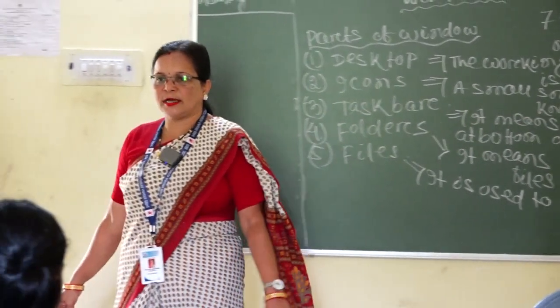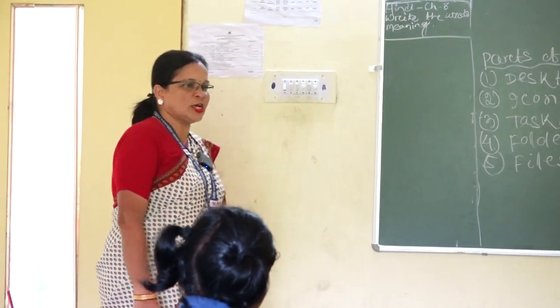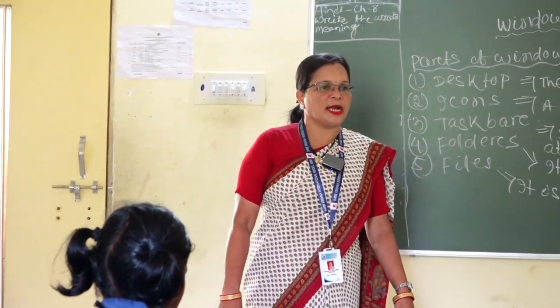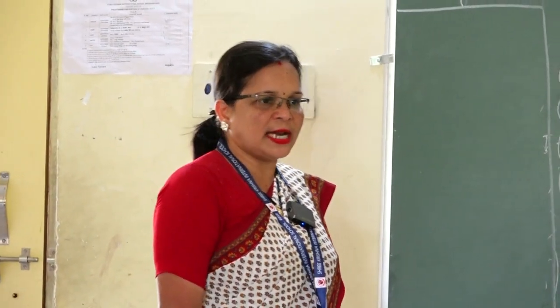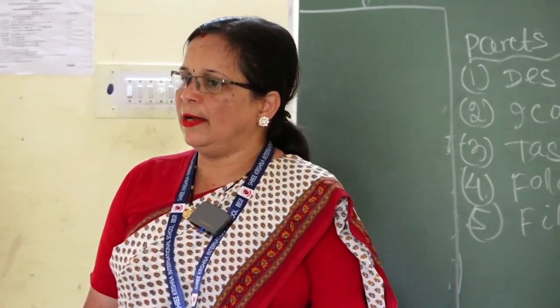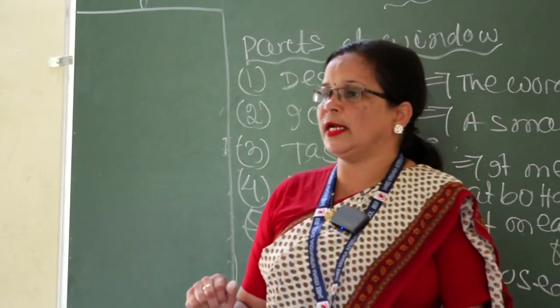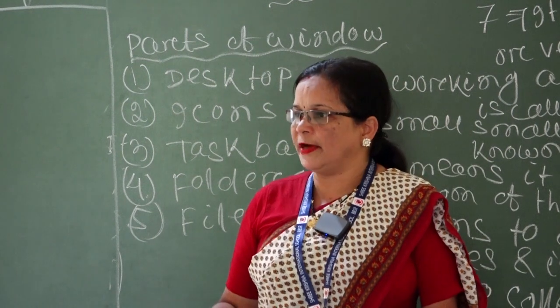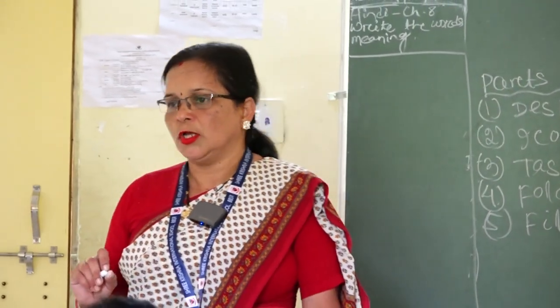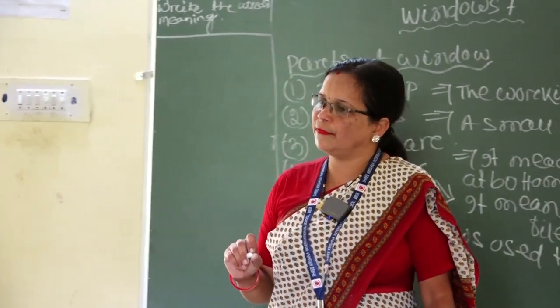So these are the parts of Windows. Number 1, desktop means the working area of Windows. Number 2, icons — a small picture is known as icon. Number 3, taskbar is always at the bottom of the Windows. Number 4, folder means it is used to collect information and varieties of files. Number 5, file means the collection of information. The difference between folder and file: folder is the collection of different files and information, but file is used to collect only information.